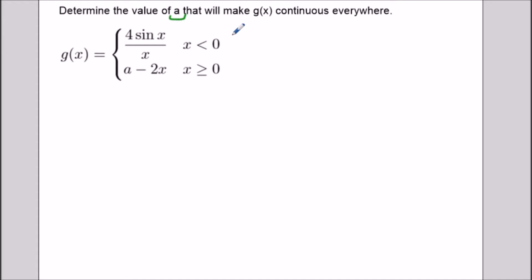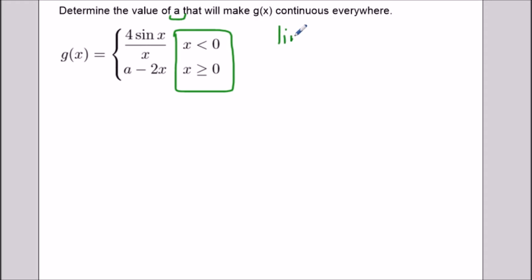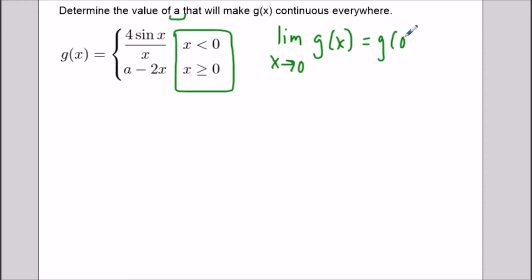The only place we could run into trouble for this function g of x is when it switches from one piece to another. So the problem could occur at x equals zero. What we need for this to be continuous everywhere is the limit as x approaches zero of g of x to be equal to g of zero. This comes from the textbook definition of continuity.